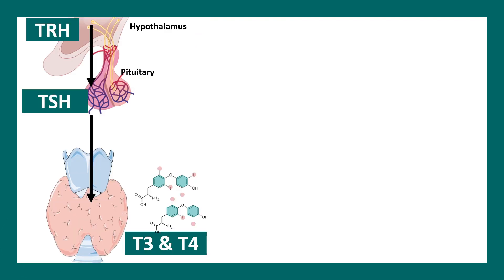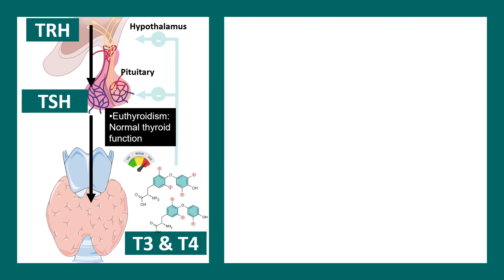This particular axis has to be regulated because there could be negative feedback on the pituitary and hypothalamus. If everything goes okay, this situation is known as euthyroidism — that means a normal functioning of this particular axis. There is proper negative feedback, and the levels of T3 and T4 are balanced — not too much and not too little.